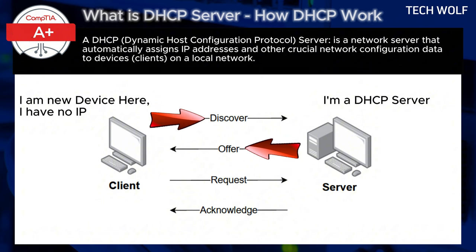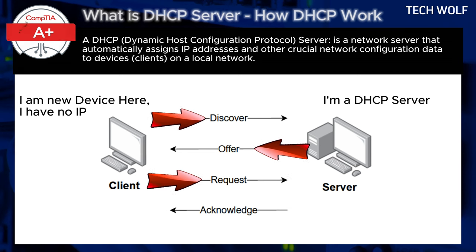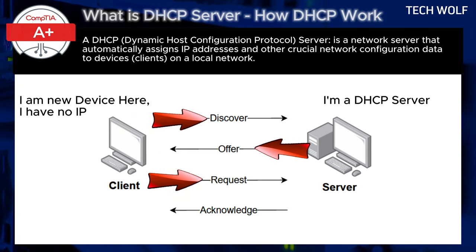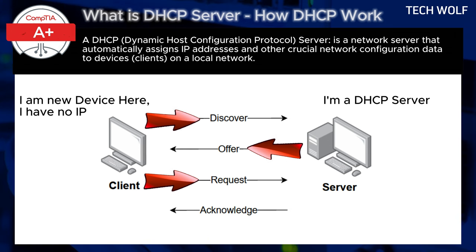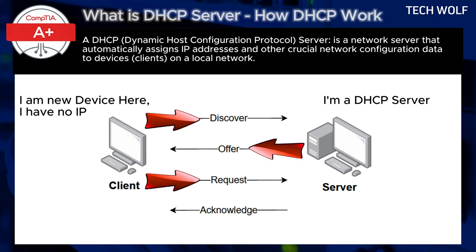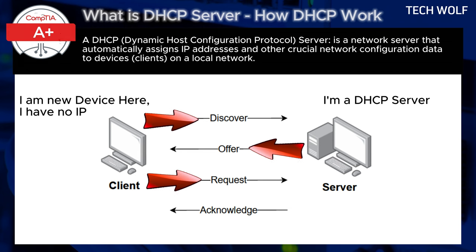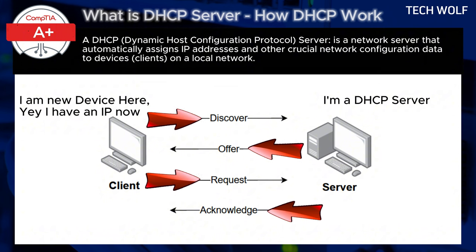DHCP Request is the third step. The client replies to the DHCP server with a DHCP Request message indicating it accepts the offer. This request confirms that the client device intends to use the offered IP address and configuration. Step 4 is DHCP Acknowledgement, or ACK.